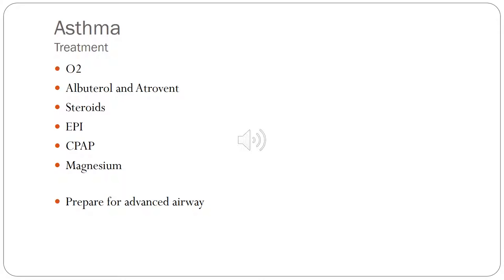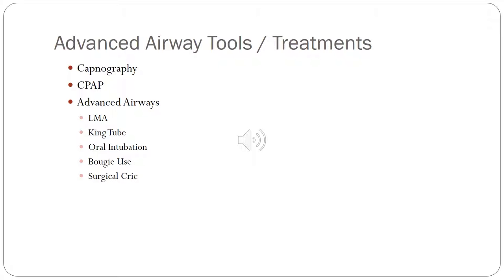If you've gotten to these patients, they've usually already used their albuterol. Move on to Atrovent, steroids, and epinephrine. Magnesium is further down the list because in some services it's a call-in order. CPAP is proven beneficial, and many current CPAP devices allow inline nebulization so you can still treat with albuterol, Atrovent, and O2 while delivering supplemental oxygen through the CPAP. Always prepare for advanced airway. Ask patients if they've ever been intubated before — many know and can tell you their status.